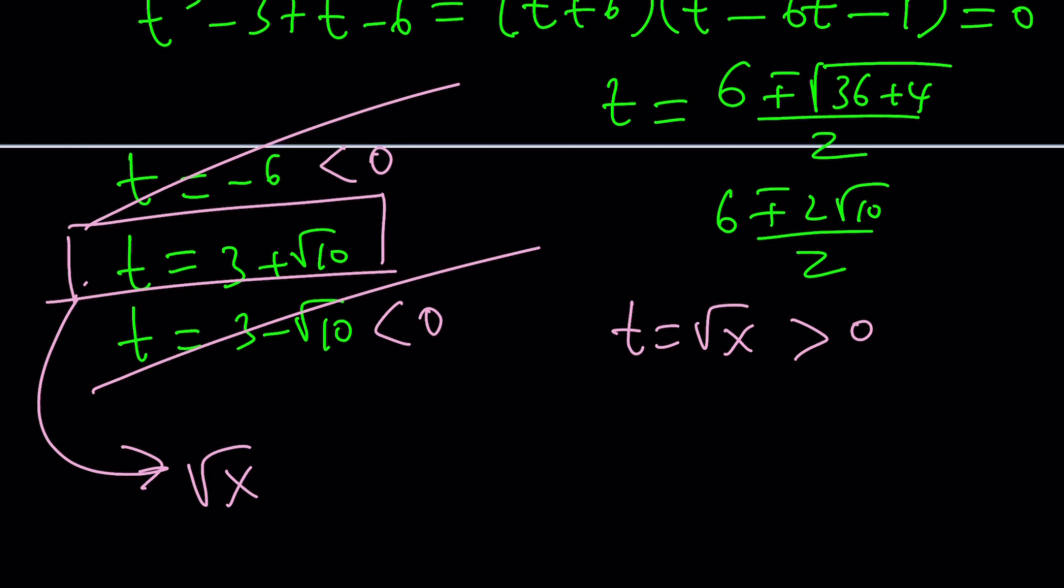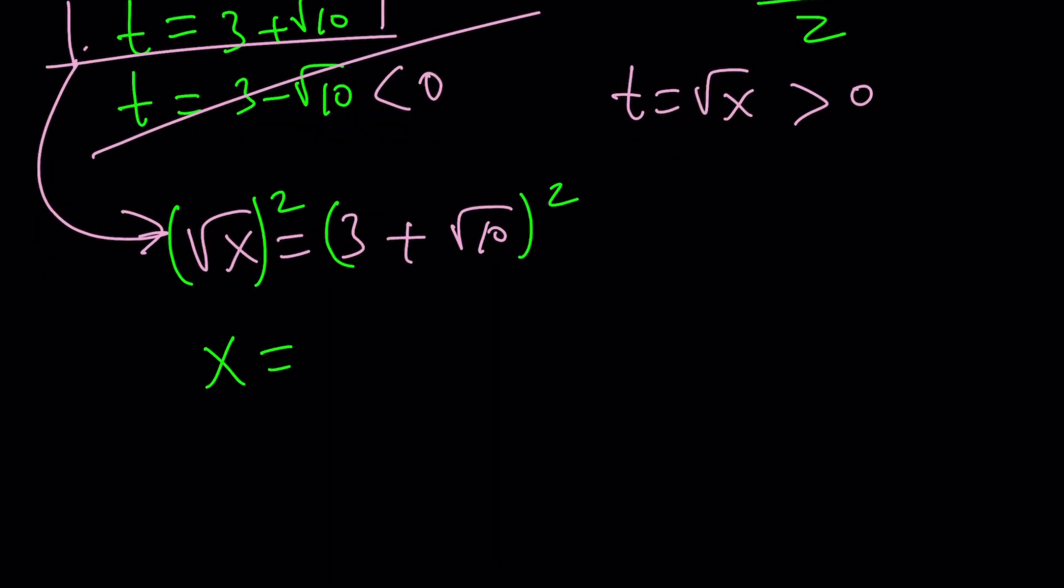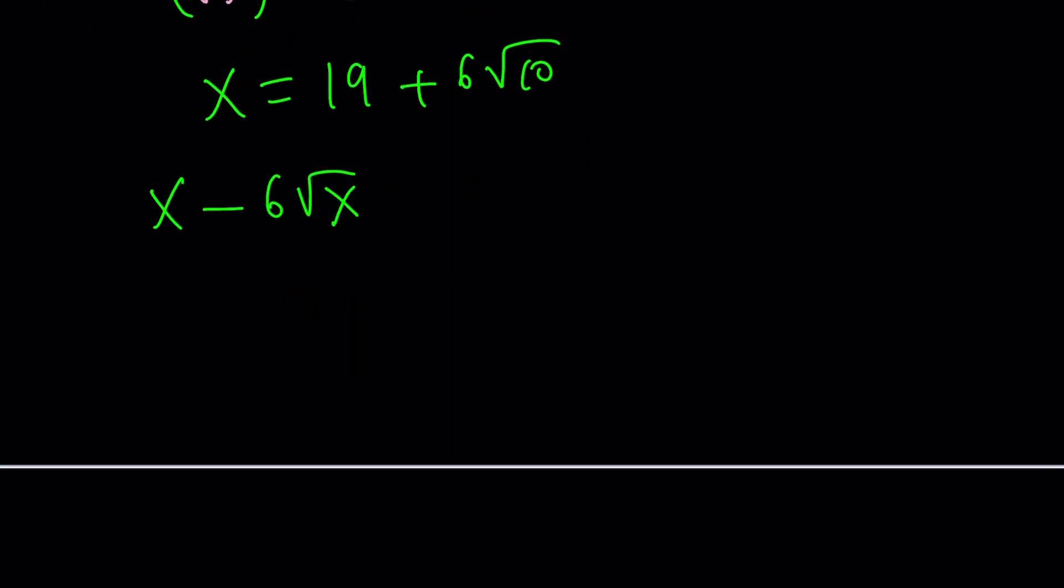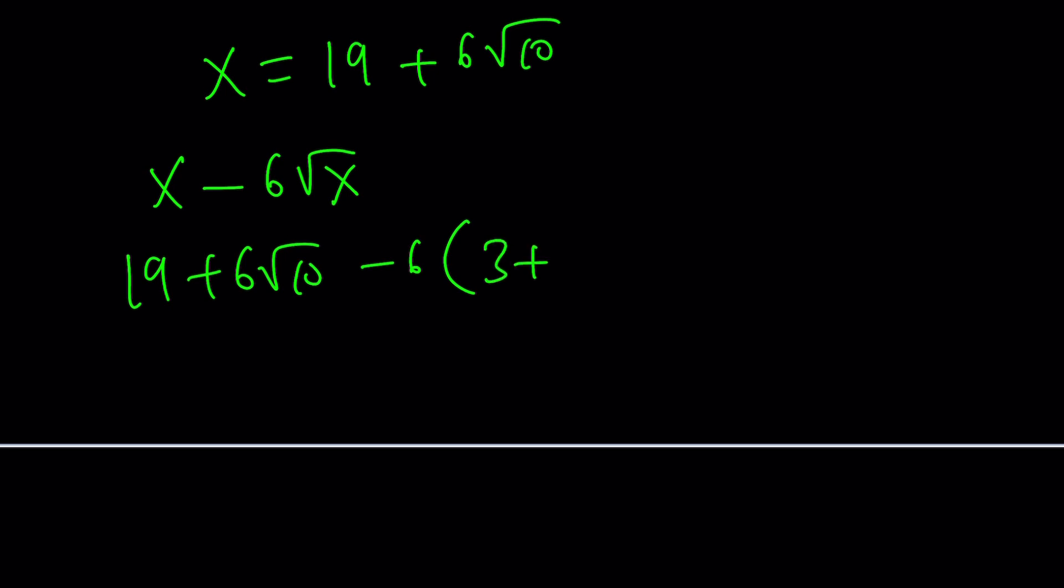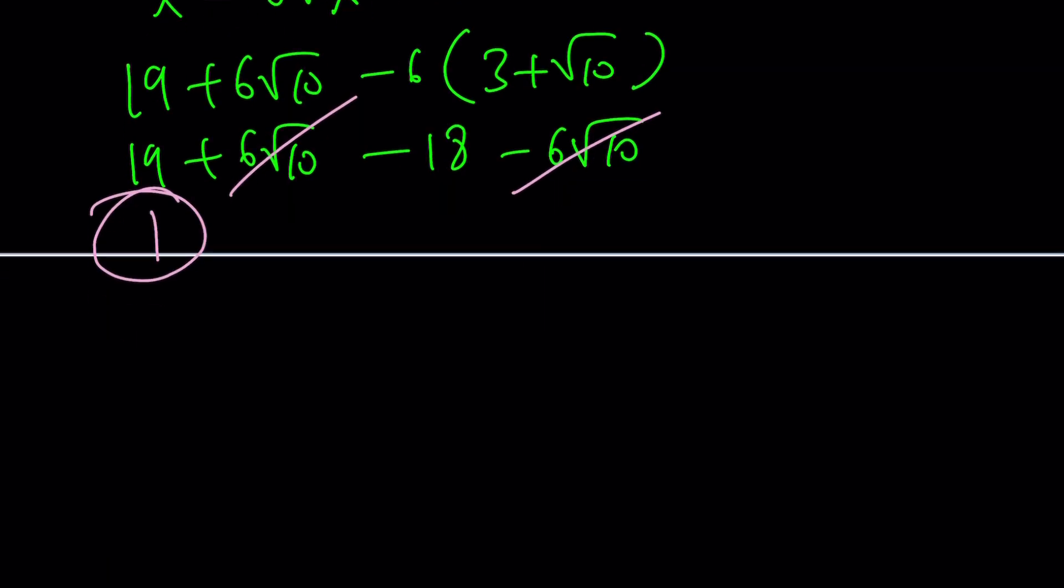But that implies that square root of x is equal to 3 plus root 10. So we can go ahead and square both sides to find the value of x, the only value of x that works. 9 plus 10, 19 plus 6 root 10. Now, based on the values of x, we were supposed to evaluate x minus 6 square root of x. And to find it, we can just plug it in. Remember, x is 19 plus 6 root 10 minus 6 times square root of x is 3 plus root 10. So if you simplify this, 19 plus 6 root 10 minus 18 minus 6 root 10. Obviously, 6 root 10 cancel out. And we end up with 19 minus 18, which is 1. And that should be the answer. Wow. First method took a long time, right?